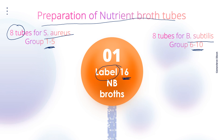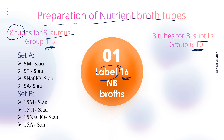Groups 1 to 5 will not process B. subtilis, and groups 6 to 10 will not process S. aureus. The labels should be organized into Set A and Set B. For Set A, label each tube with the time — five minutes — and the name of the chemical: M for merthiolate, TI for tincture of iodine, sodium hypochlorite, and alcohol, along with the name of the organism being processed. Set B will be the same except the time changes to 15 minutes.